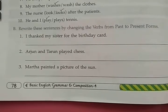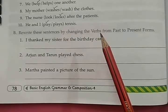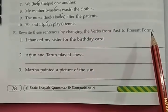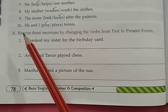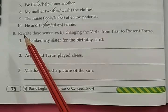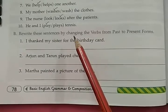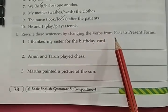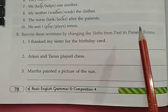Exercise B. Read the question: Rewrite these sentences by changing the verbs from past to present forms. Rewrite means 're' means again — you have to write again. You have to change these sentences in the verb — from past to present.